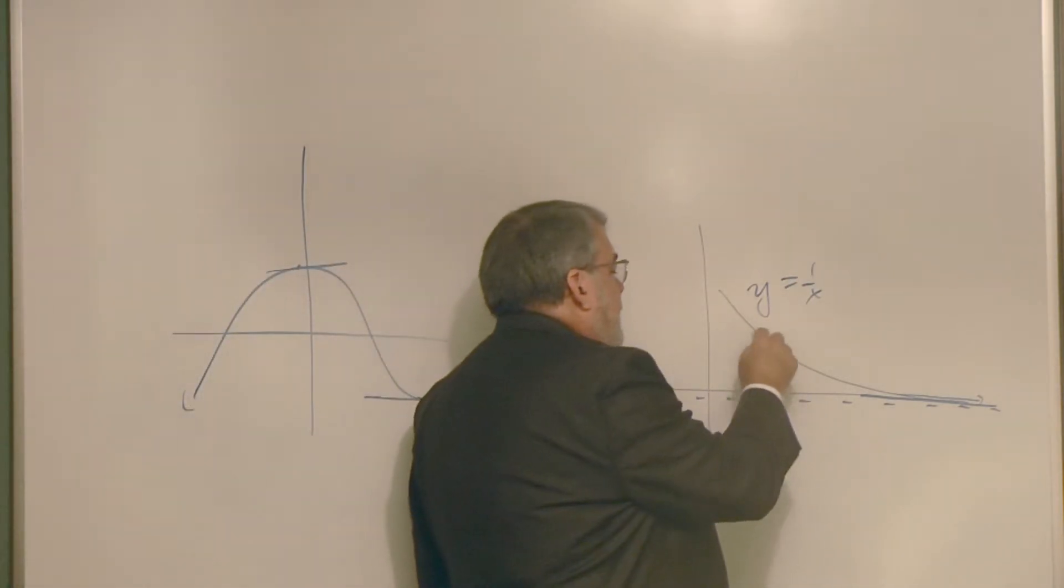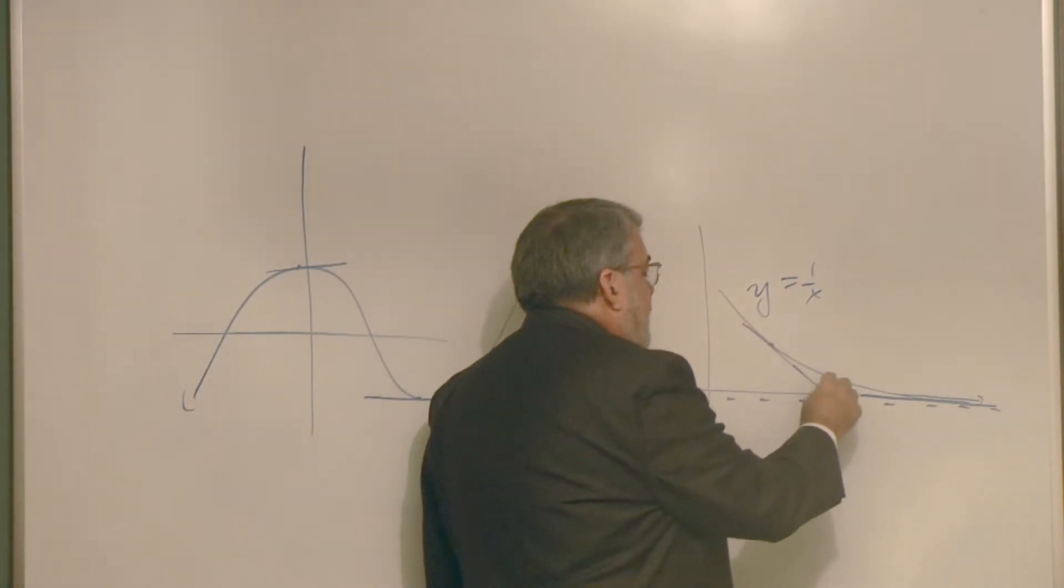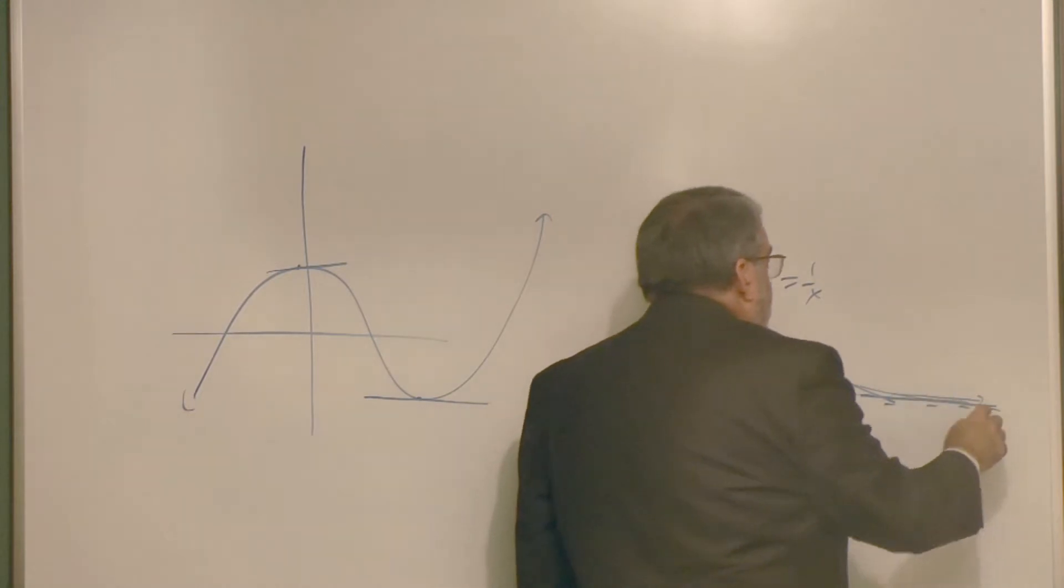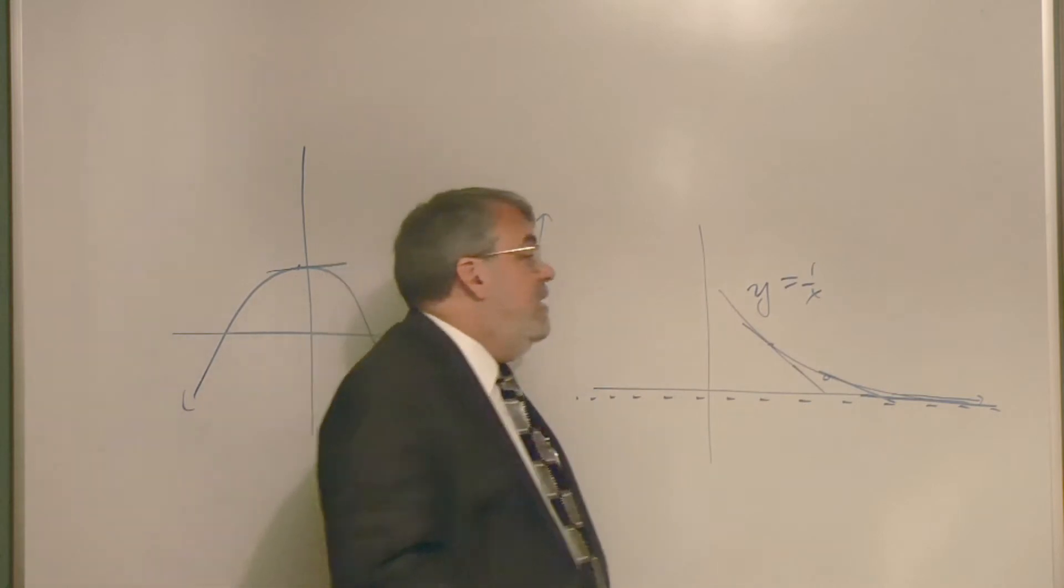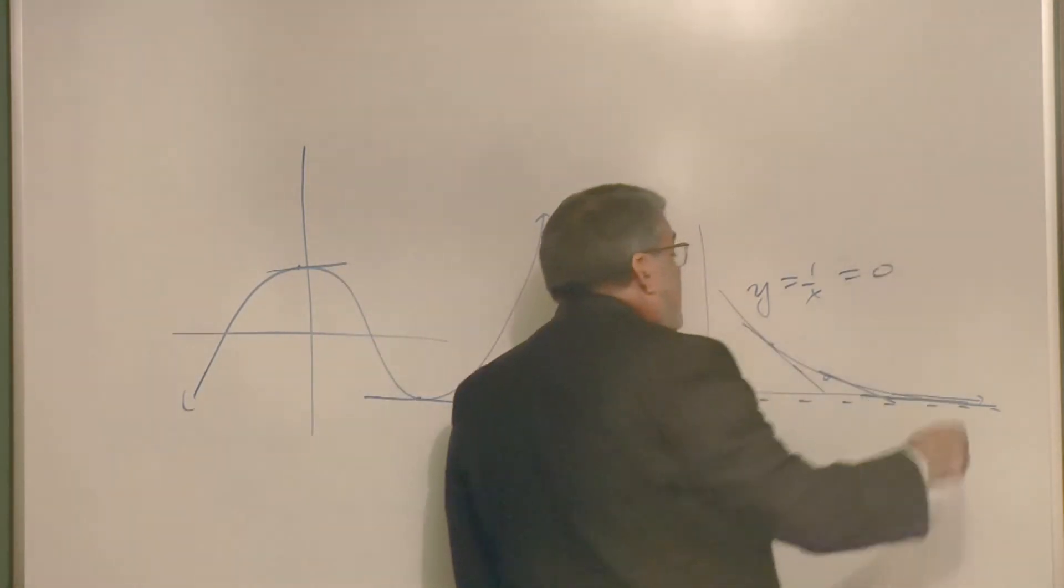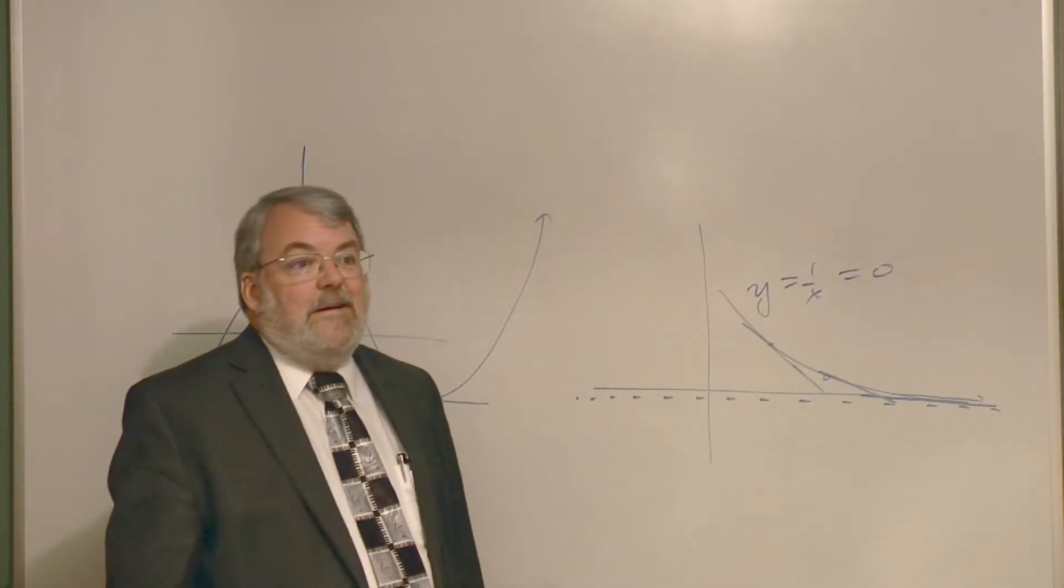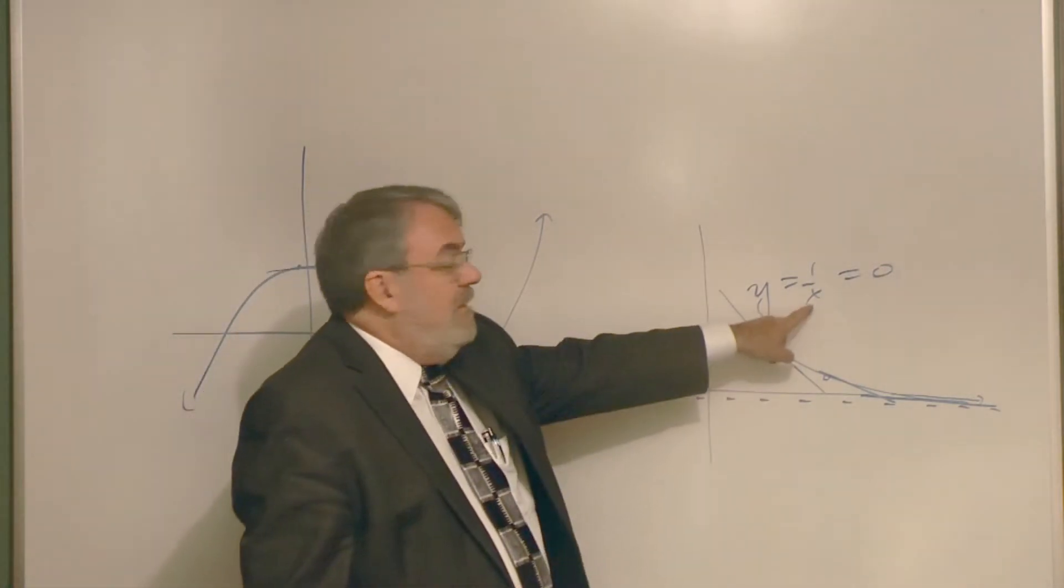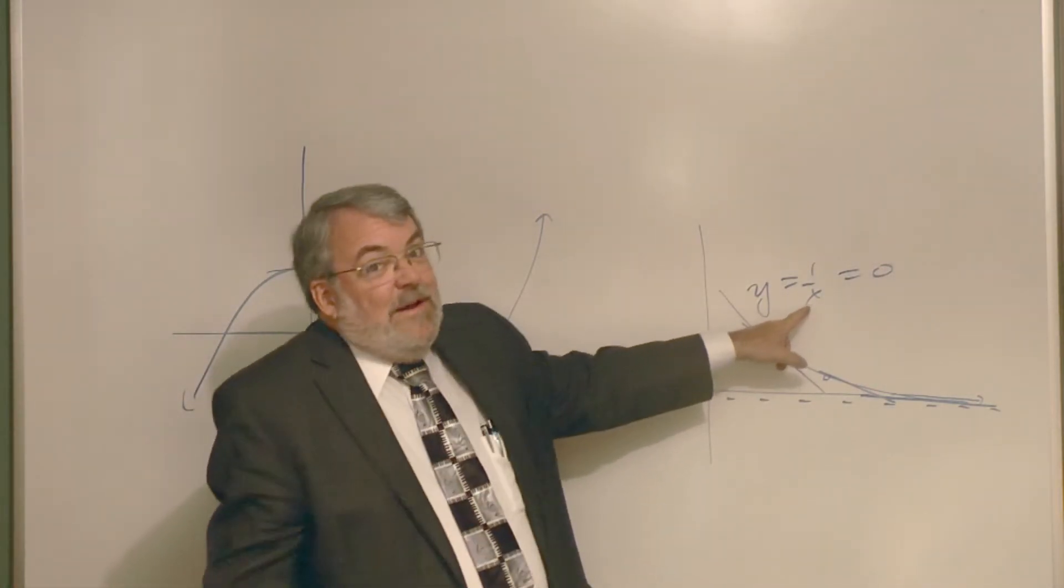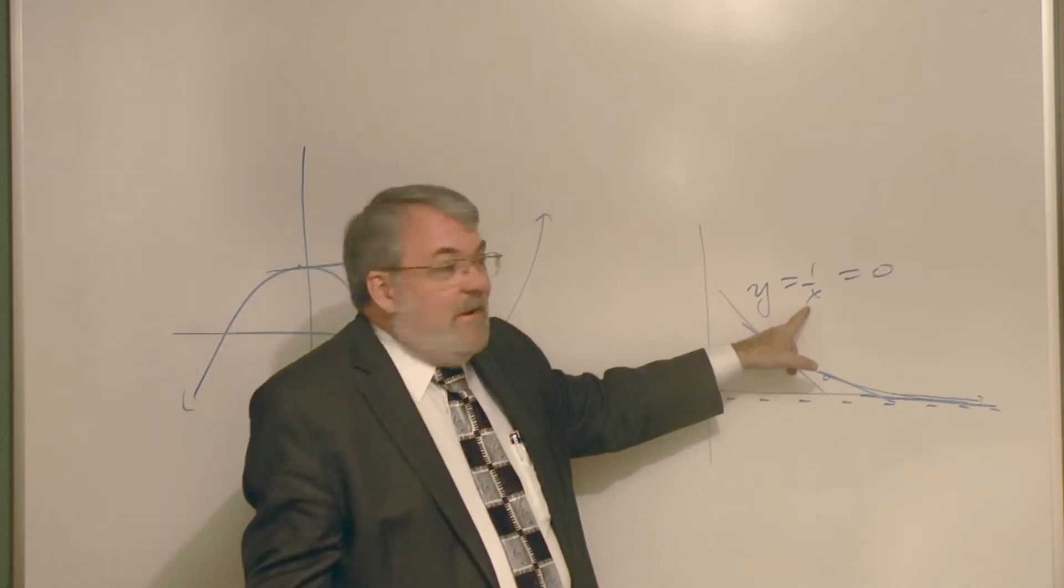But when you start picking numbers, the tangent lines are just going to get you closer and closer and closer to infinity. So attempting to set that equal to zero and solve it, Newton's method is going to take you out to infinity. Well look at this, this particular equation has no answer anyway because one divided by a number is not zero.